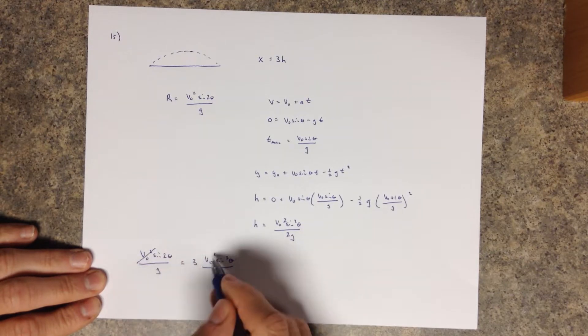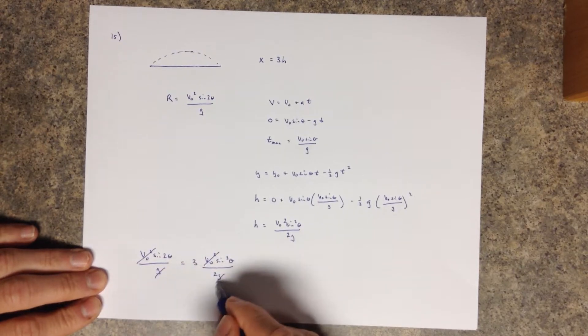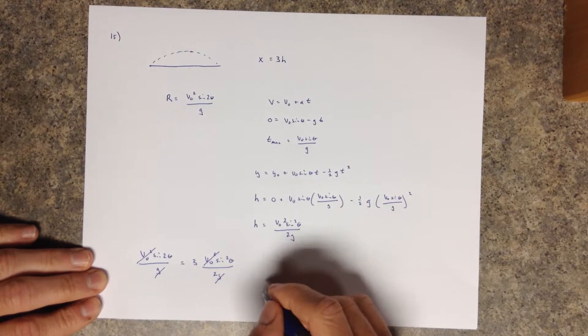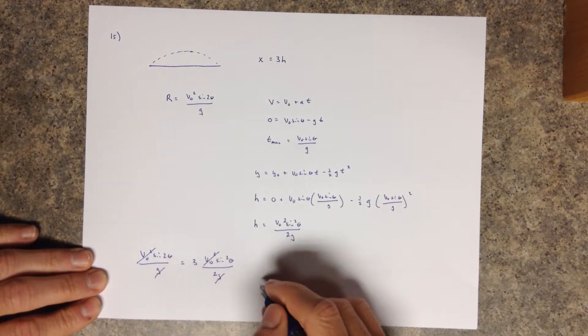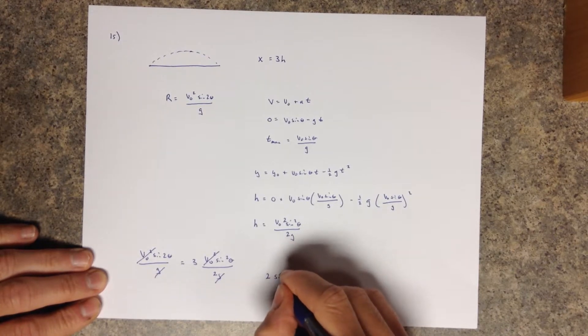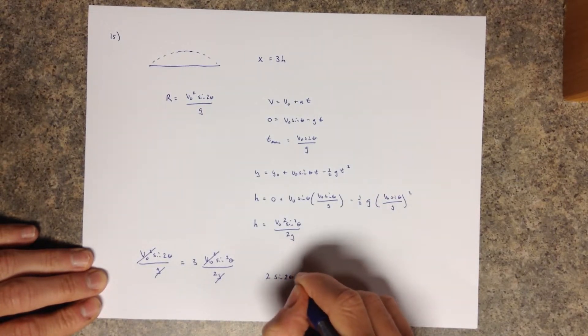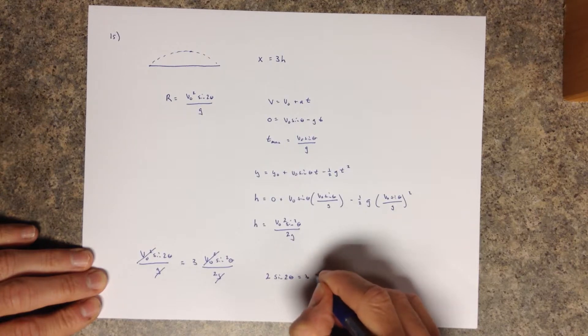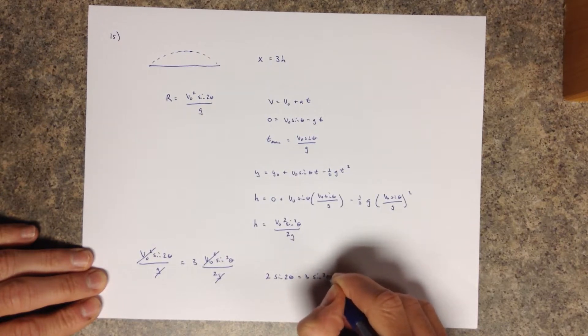So cancel, cancel, cancel, cancel. And so really what we're left with is, if we multiply both sides by that 2, we get 2 sine 2 theta equals 3 sine squared theta.